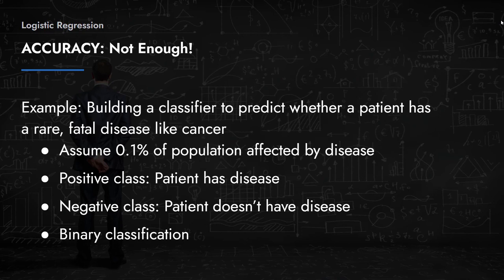Here's an example I first encountered in college. Imagine you're building a classifier to predict whether a patient has a rare fatal disease like cancer. The key words are: rare and fatal. Assume 0.1% of the population is affected. The positive class is assigned to patients who have cancer, and the negative class to those who don't.